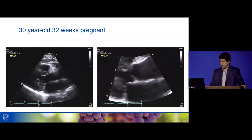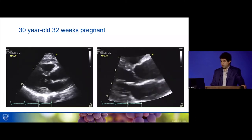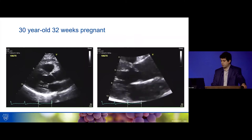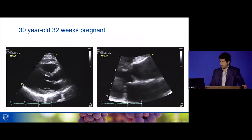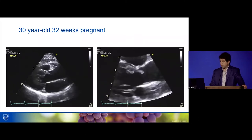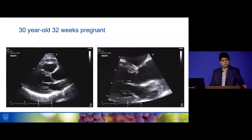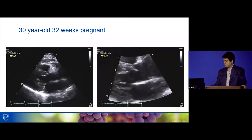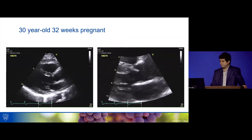Moving to the echo, on the left-hand side you can see the LV — normal size and function, not much in the way of LVH. When we zoom into the aortic valve on the right-hand side, you can see the cusps are clearly abnormal, with reduced excursion and thickening.